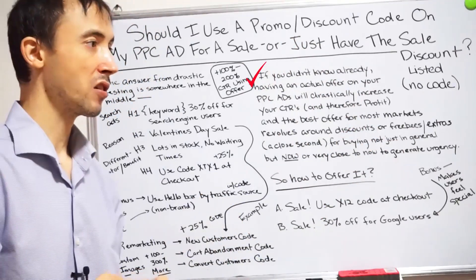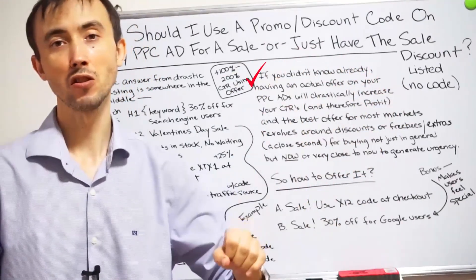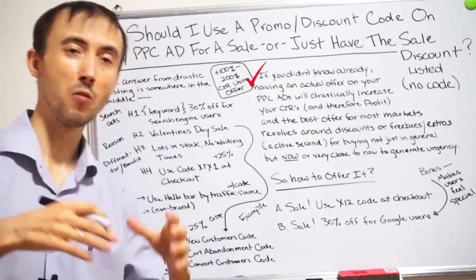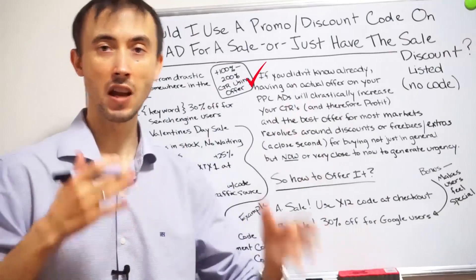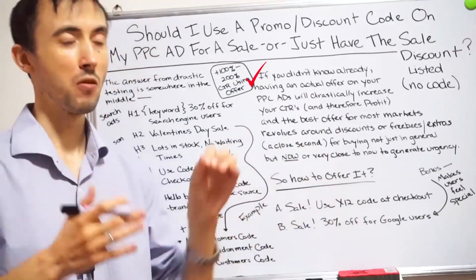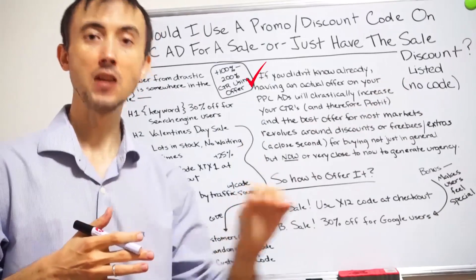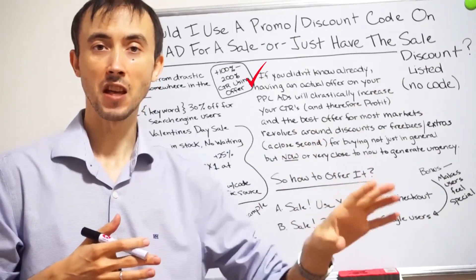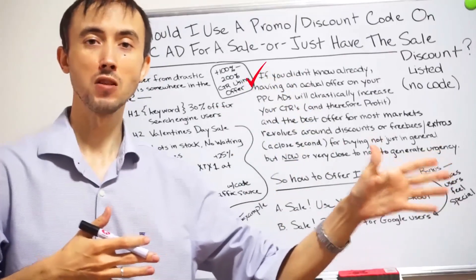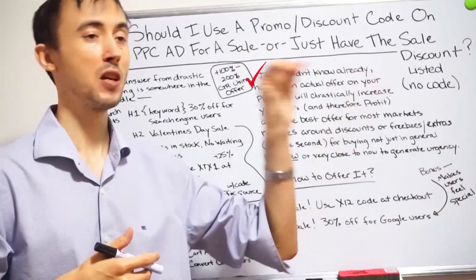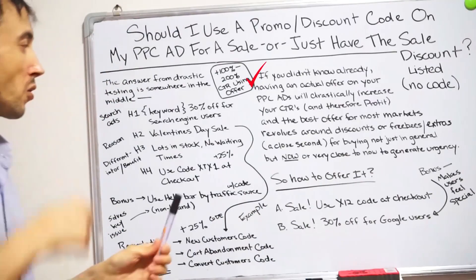Some people do a percentage off storewide and put that in their ads to get click-through rates up. The cost per click goes down the higher your click-through rate. If they get to your site and know they only have so much time to use the offer because you've tied a specific time frame to it, they'll also convert at a higher rate on your site. So you get two points where you'll get more sales, and you're shooting for at least twice the sales revenue versus what you're spending on the discount.